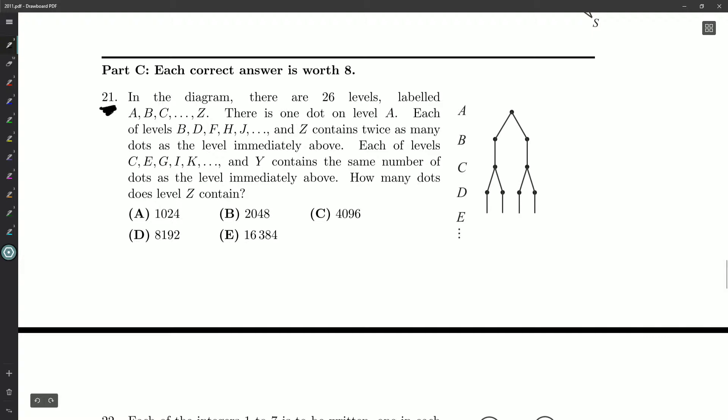In the diagram, there are 26 levels, labeled A, B, C, D, all the way up to Z.